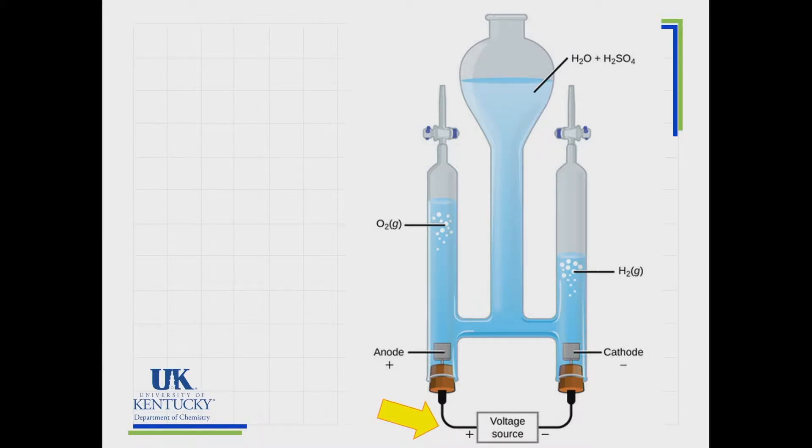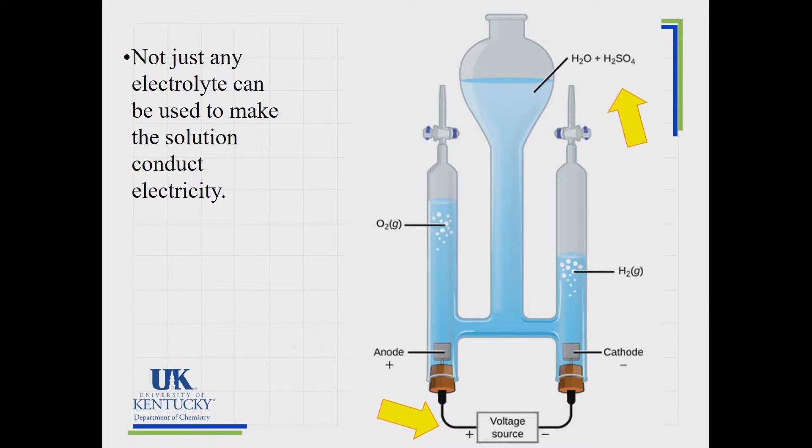You have a cathode where reduction will occur and an anode where oxidation will occur. The sign convention is opposite for reasons we might get into. Up here we see an added thing that's not part of the reaction, sulfuric acid. Water is not a very good conductor of electricity. There's very few ions present, so you tend to want to add an electrolyte into your solution.